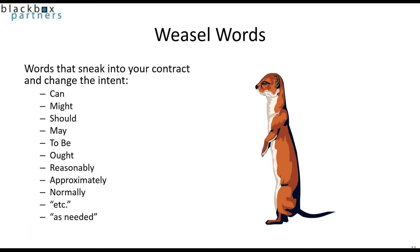Weasel words are words that sneak into your contract and change the intent. These are words like can, might, should, may, to be, ought, reasonably, approximately, normally, etc., as needed. These words are like weasels — they're thin words that slip into your contract and wind up ruining the intent. None of these words have very strong meanings like will and shall. It may seem boring to write statements of work in contracts that only use will and shall, but it is much better than having weasel words that have snuck into your contract, changing the intent, or words that could be reinterpreted without clarity.